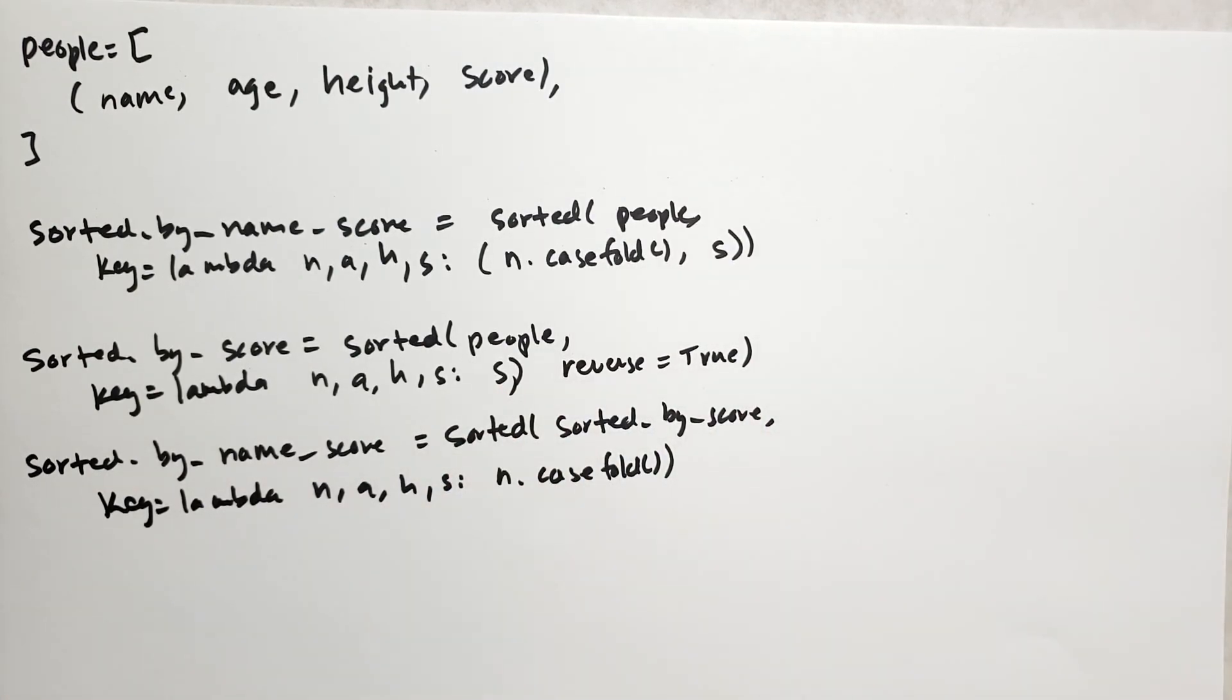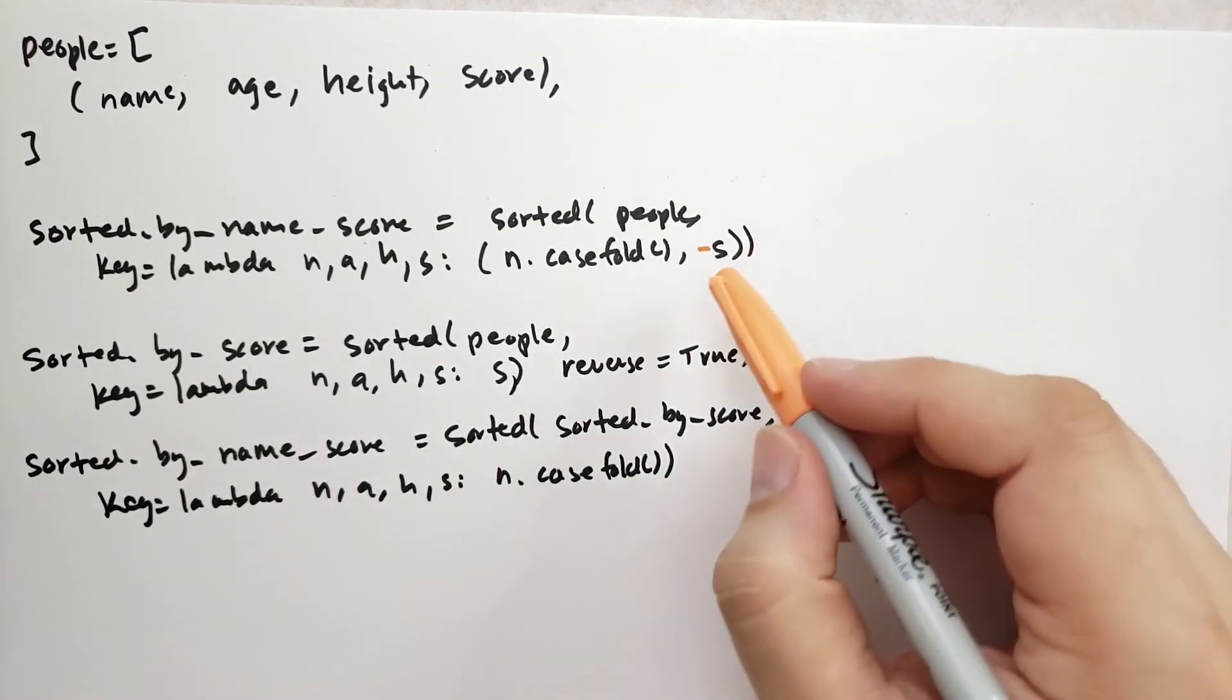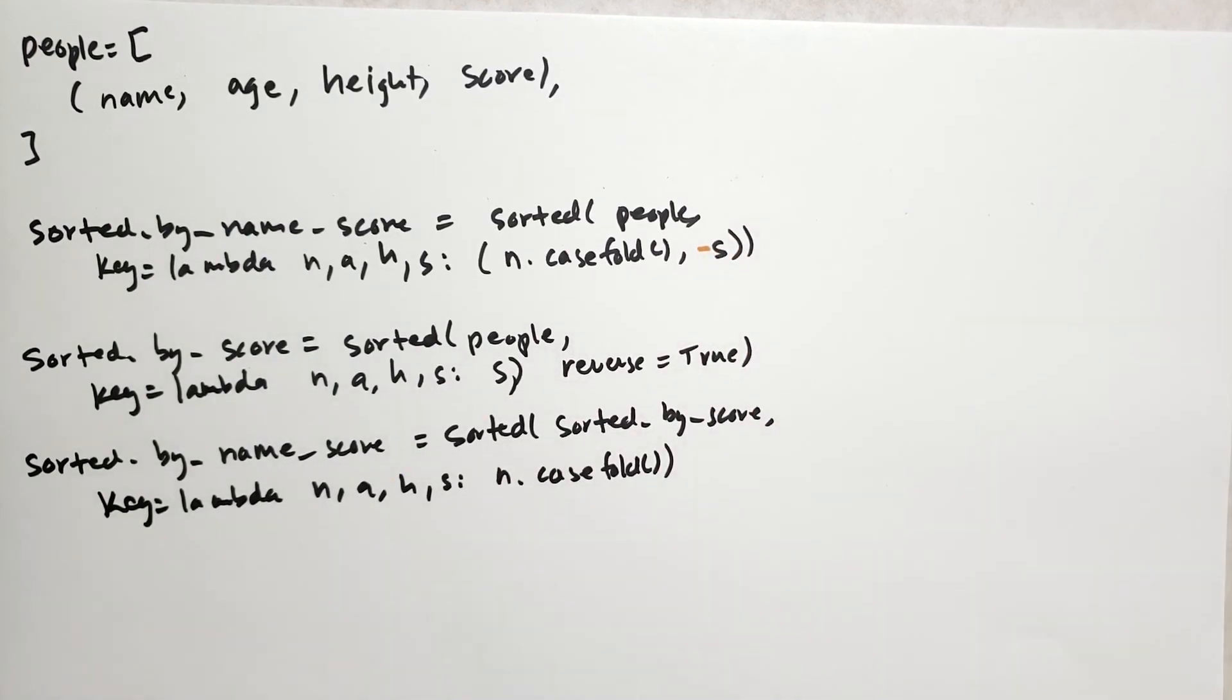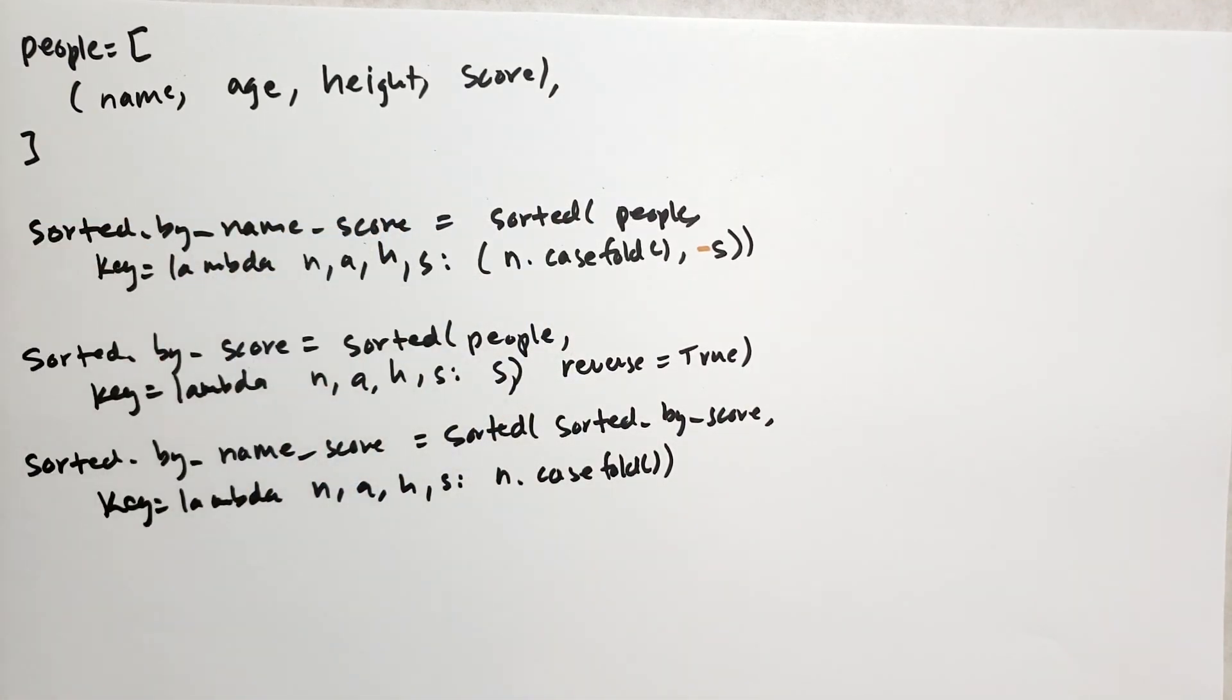Now you might think, well, what if we just added a minus sign here - we could say it's going to be minus score. That would work too because of the nature of numbers - if you apply minus to the number, then you have to flip the ordering. Sometimes though, you want to sort by like name descending rather than name ascending, in which case there is no minus sign for names. So you'd have to use a reverse sort on the name. Anyway, that's about all there is to this.